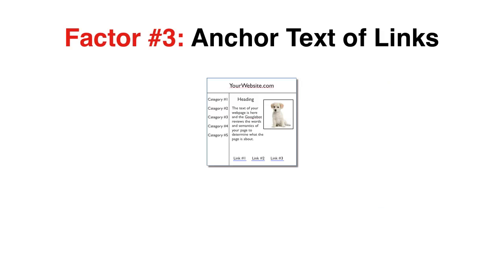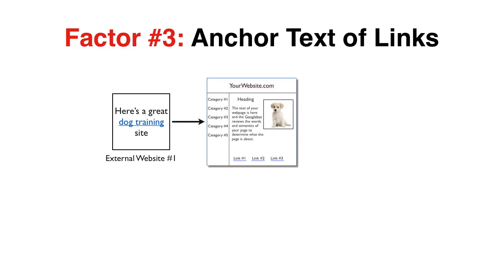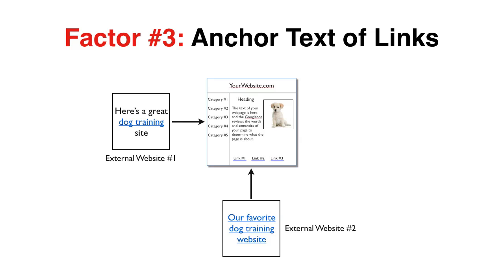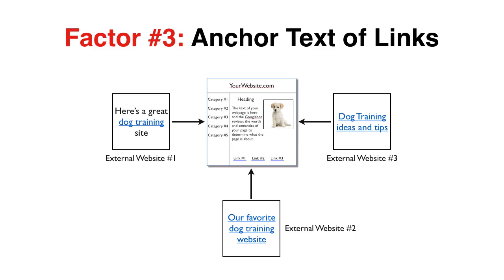A third factor that influences the rank of a particular page is the anchor text of the incoming links. Google uses the text of the links that point to a page to gain a better indication of what a page is about. For example, if all three of these linking sites use the words 'dog training' in their links, then there's a very good chance that the page they refer to is about dog training. One of the most powerful and effective strategies for improving your ranking in Google is to use Market Samurai to reverse engineer the link network of your competitors.